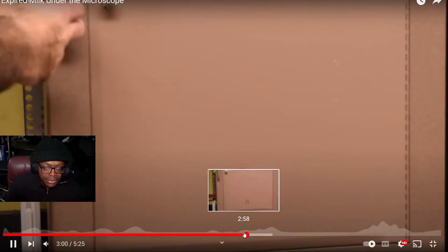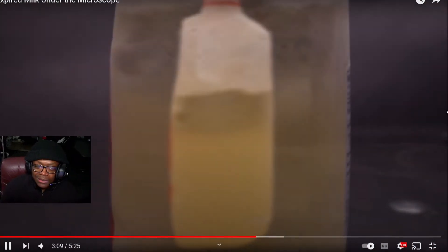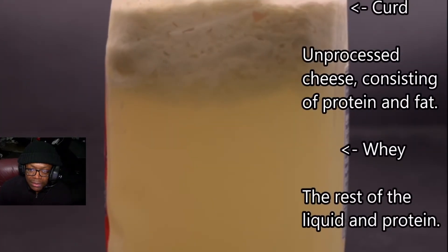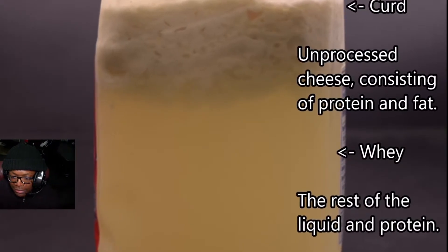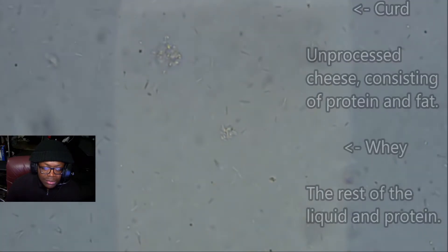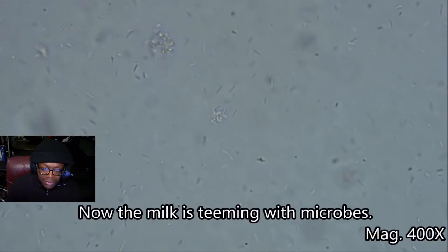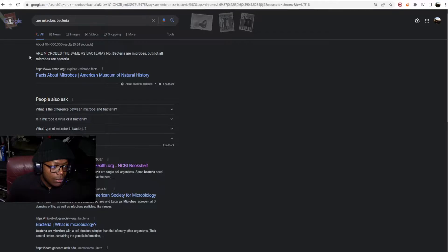He put it in the oven. So now this is what we were looking for: the curdled milk. Curd is unprocessed cheese consisting of protein, fat, whey, and then the rest is liquid and protein. Now we have a ton of microbes, a ton of bacteria.